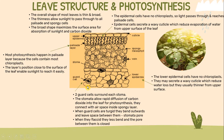The guard cells. There are two guard cells surrounded by each stoma. The stomata allow rapid diffusion of carbon dioxide into the leaf for the process of photosynthesis. They connect with the air spaces inside the spongy mesophyll. When the guard cells are turgid, they bend outward and leave a space between them, creating the stomatal pore. When they are flaccid, they are less bent and the pore between them is closed. The lower epidermis is similar to the upper epidermis — cells have no chloroplasts and may secrete a waxy cuticle which reduces water loss, but it is usually thinner than the upper surface.